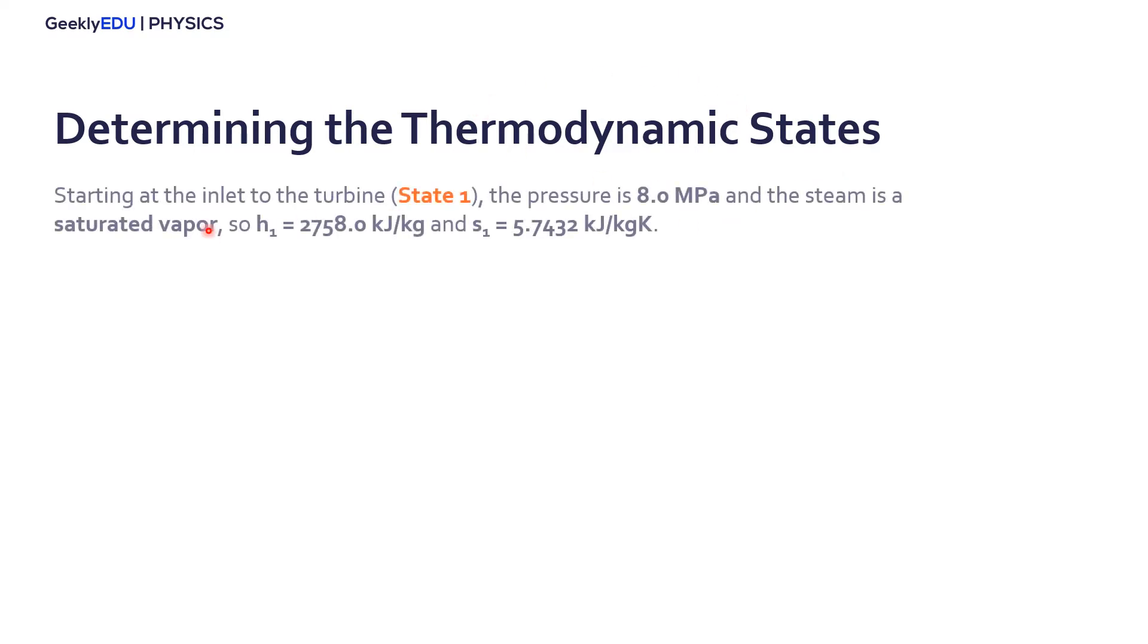We can start from the inlet of the turbine, state number one. There we know the pressure and we know the quality, that saturated vapor. From these two informations here, you can look for the enthalpy and entropy in any thermodynamic table that we have in books, and we have several computer softwares to find it for you, and we have several online tables. So you can just insert the quality saturated vapor and the pressure there, and you can find these two properties.